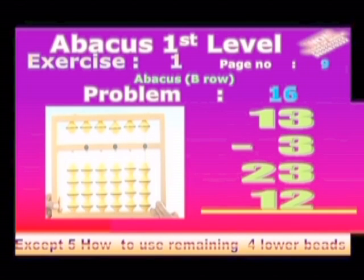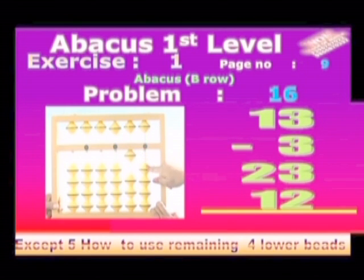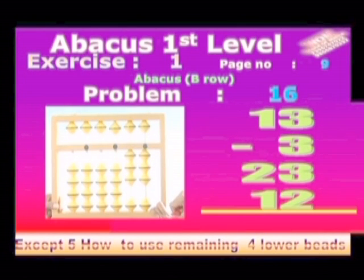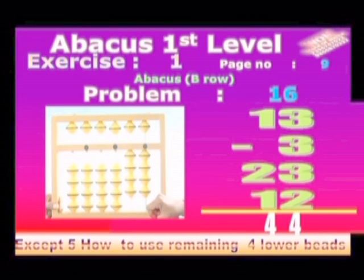Take 13: 1 in 10's place, 3 in 1's place. Minus 3 in 1's place. Add 23: 2 in 10's place, 3 in 1's place. Add 11: 1 in 10's place, 1 in 1's place. Answer is 44.